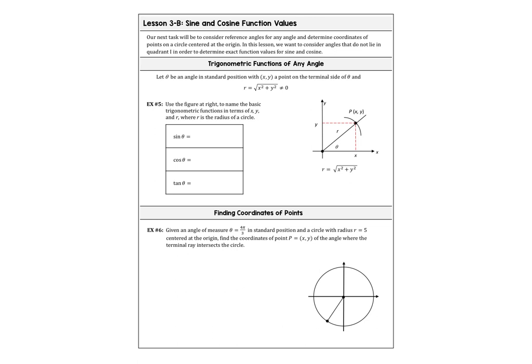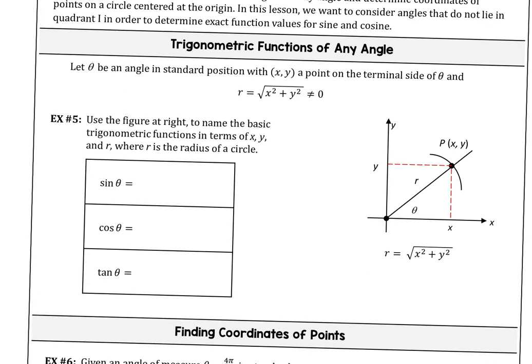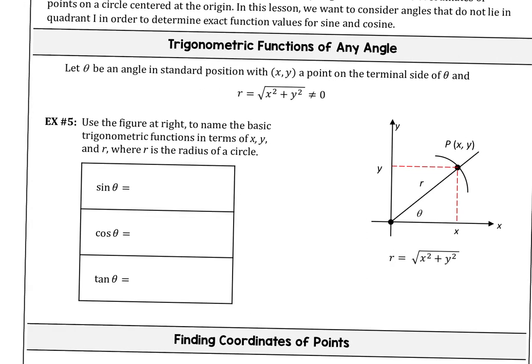We're still working with sine and cosine here, and we're still going to be using some of our properties. Just to recap: if we have theta as an angle in standard position with point (x, y) on the terminal side of theta, remember that sine gave us y over r — the y-coordinate over the radius. We mention that because we're now getting into things where the radius is not always 1. Cosine is x over r, and tangent is y over x, which is the slope of that line.